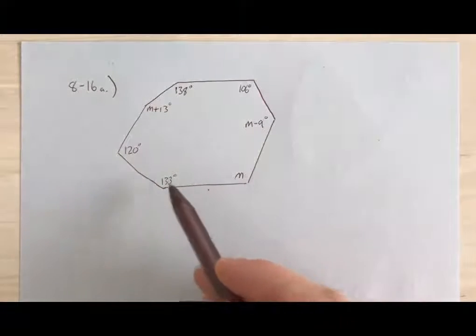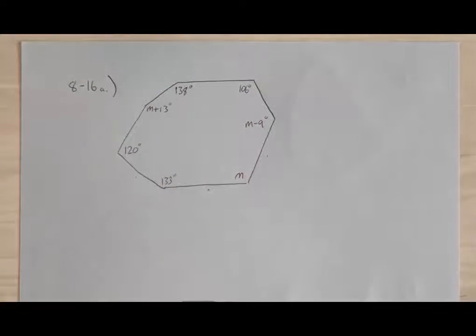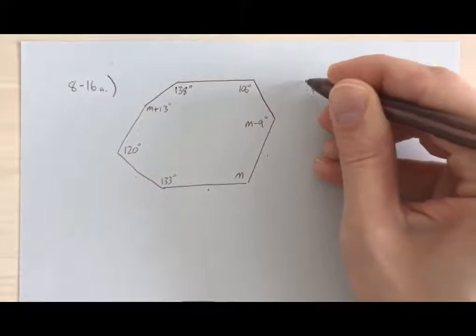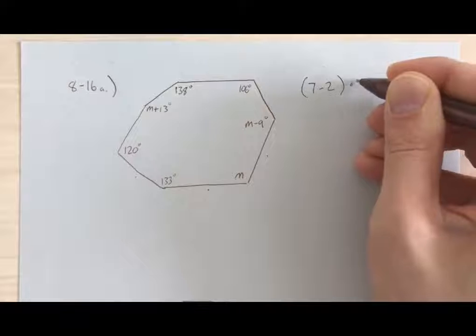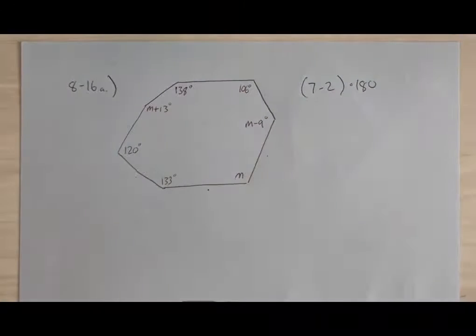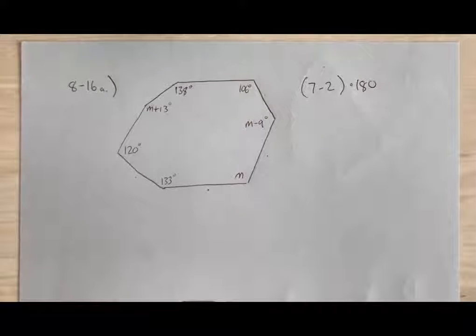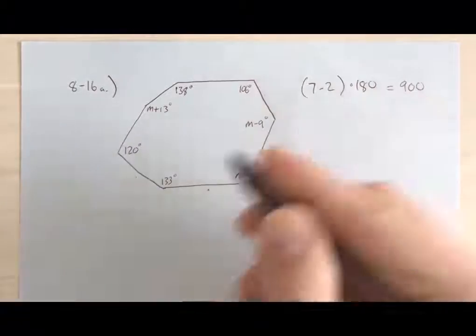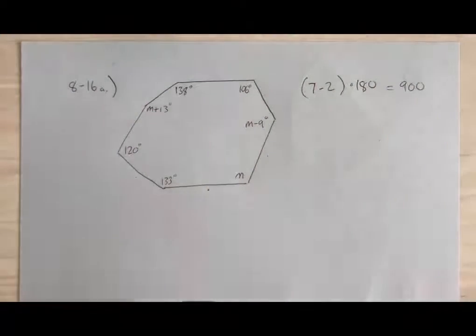So one, two, three, four, five, six, seven-sided shape here. If we use that formula that we had just learned, I would do seven minus two, number of sides minus two, times 180, and that's going to give us the sum of the interior angles. So that's going to end up being five times 180, which is 900. So all of these angles should add up to 900 for this polygon.